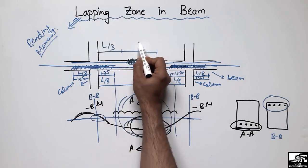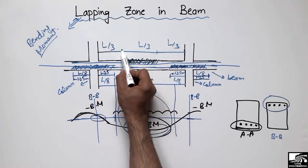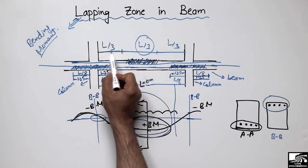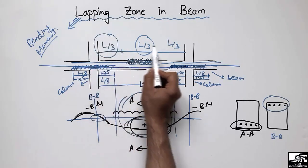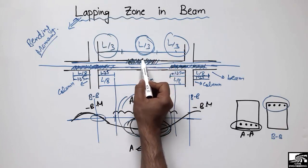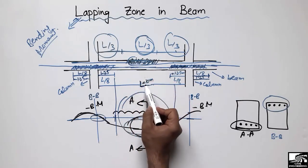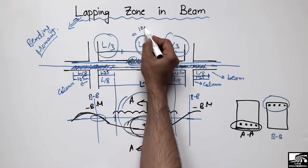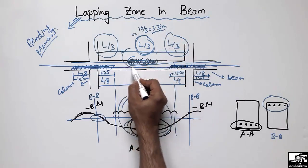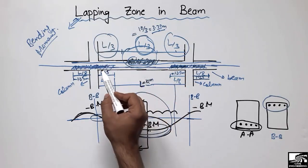This length is divided into three portions: L/3, L/3, and L/3. If this is the total length L of the beam, then only at the mid-section of distance L/3 can we overlap our top reinforcement. At the outer L/3 zones near the supports, we are not allowed to overlap. For a 10-meter beam, L/3 comes out to be 3.33 meters, so only within the middle 3.3 meters at mid-span are we allowed to overlap the top steel bars.